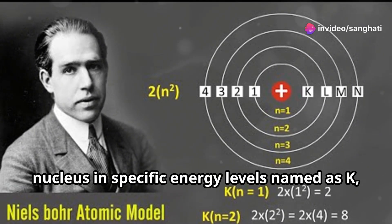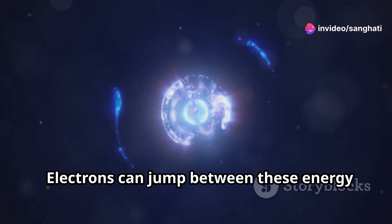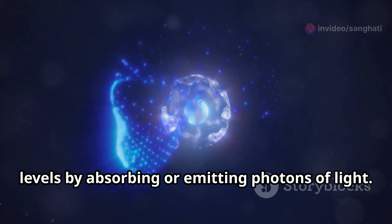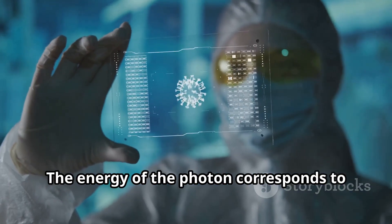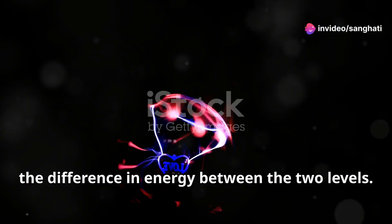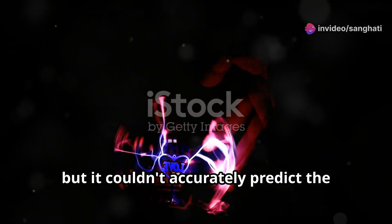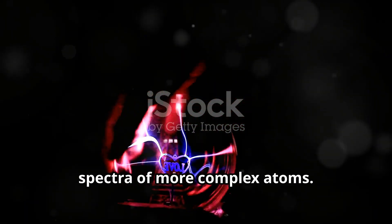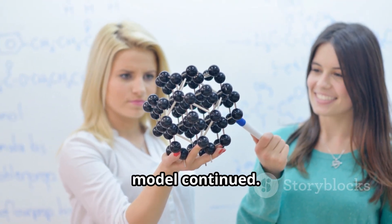Bohr proposed that electrons orbit the nucleus in specific energy levels named K, L, M and N. Electrons can jump between these energy levels by absorbing or emitting photons of light. The energy of the photon corresponds to the difference in energy between the two levels. Bohr's model successfully explained the atomic spectra of hydrogen, but it couldn't accurately predict the spectra of more complex atoms. The quest for a more complete atomic model continued.